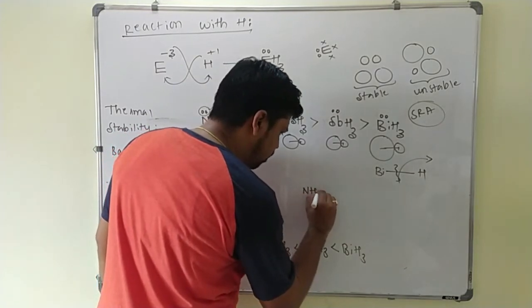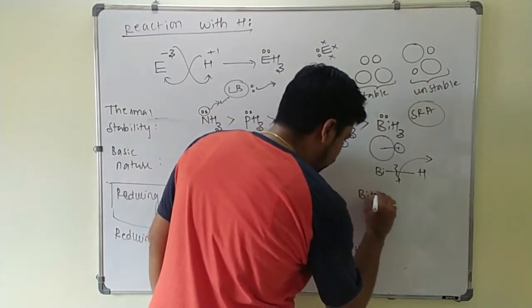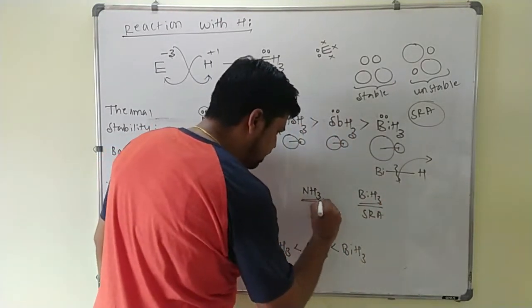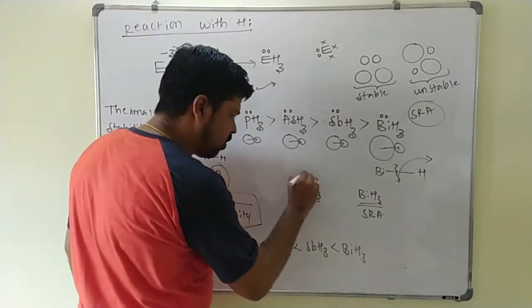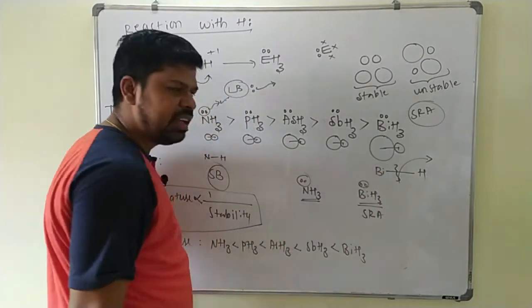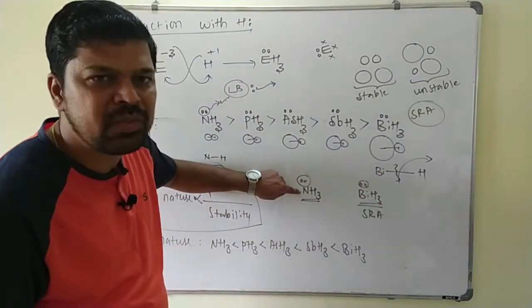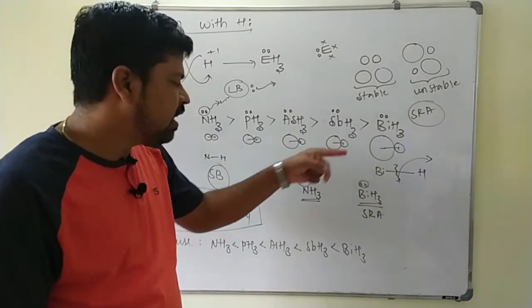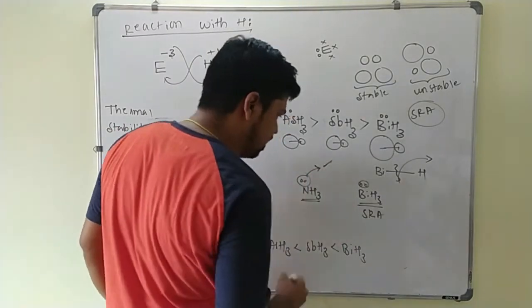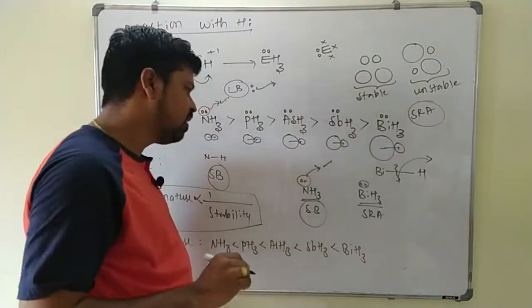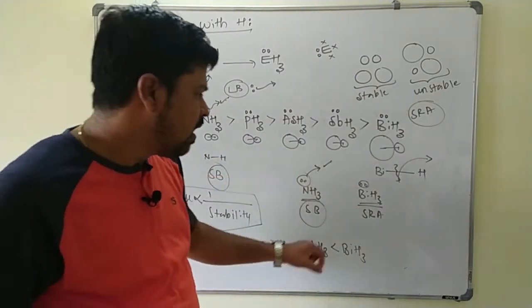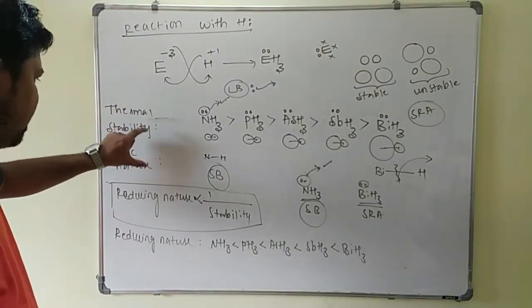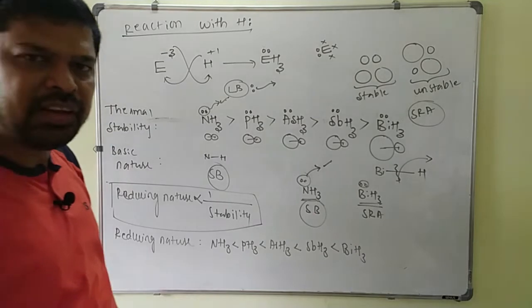Keep in mind that BiH3 is the strongest reducing agent. Ammonia, due to its lone pair of electrons concentrated in a small region because of nitrogen's small size, is easily available to donate towards other species, making it the strongest base. BiH3 is the strongest reducing agent. This covers thermal stability, basic nature, and reducing nature of Group 15 hydrides.